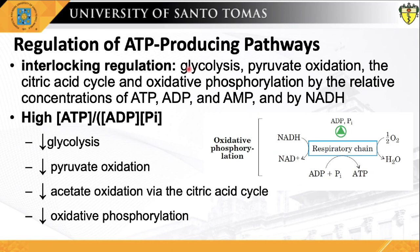The relative concentrations of ATP and ADP control not only the rates of electron transfer and oxidative phosphorylation, but also the rates of the citric acid cycle, pyruvate oxidation, and glycolysis. Whenever ATP consumption increases, the rate of electron transfer and oxidative phosphorylation also increases. Simultaneously, the rate of pyruvate oxidation via the citric acid cycle increases, increasing the flow of electrons into the respiratory chain.